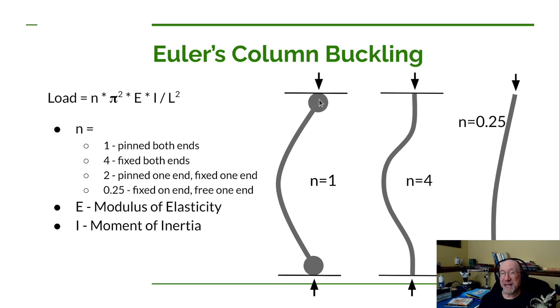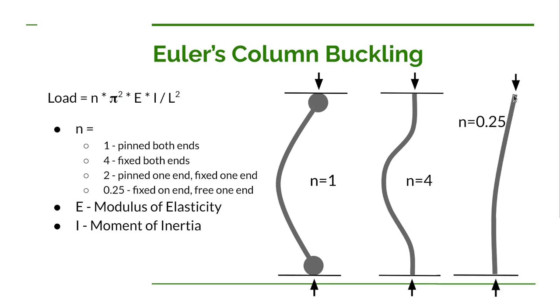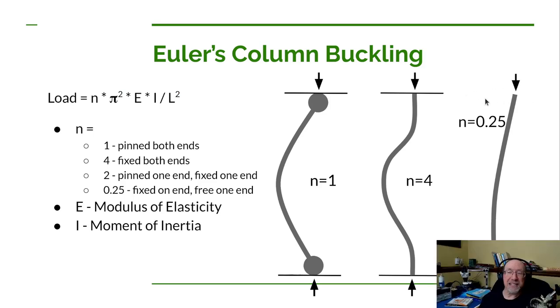The n equal four condition is where you could think of it as being welded to a rigid plate. So the tube right here at the very end can't move at all. It can't pivot like on the pinned condition over here. The next condition we'll talk about is this free n. So it's basically fixed down here on the bottom, just like over here at n equal four, but the other end can move around. It can wobble around freely. So that is n at 0.25, one quarter.